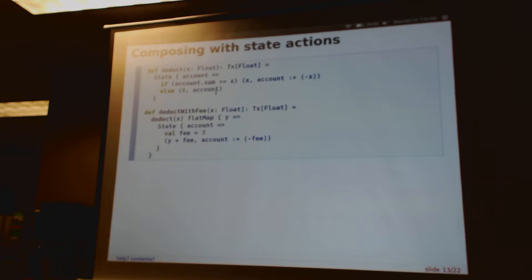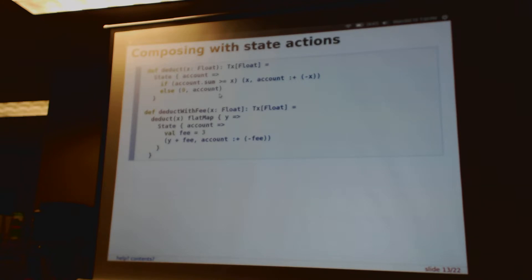Audience question: how can we combine this with Maybe so that rather than an if-else returning zero, we return an Either where one value is the deduction and the other is an error like 'insufficient funds'? Yes, exactly — in practice we are using this directly in conjunction with Either. But this simple example is already pretty tricky to parse from a slide, so I'd be happy to go into that afterward.